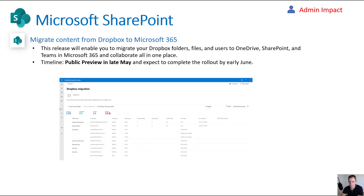Microsoft has been aggressively adding support for migrating third-party file stores into SharePoint, and now they're adding Dropbox to that list. You'll be able to stage a migration from Dropbox for all files and folders into OneDrive and SharePoint. This will be in public preview in late May, complete in early June, and it allows you to do this without paying for a third-party service like BitTitan or Skykick. Those tools are probably more robust, and since this isn't fully tested yet, I'd recommend testing it with a smaller tenant if you have a Dropbox migration coming up.